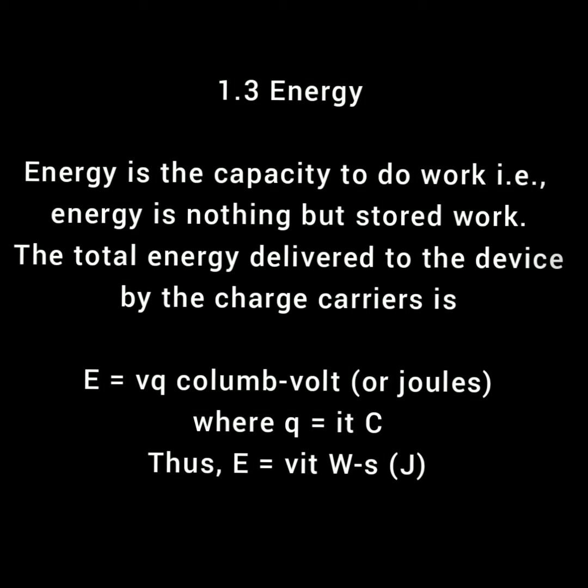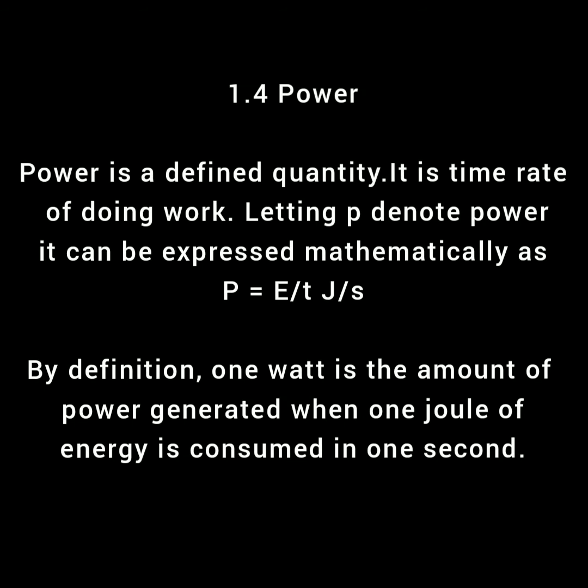Next, power. Power is a defined quantity; it is the time rate of doing work. Letting p denote power, it can be expressed mathematically as p = w/t. The unit is joules per second. By definition, one watt is the amount of power generated when one joule of energy is consumed in one second.